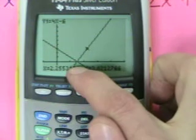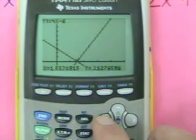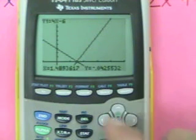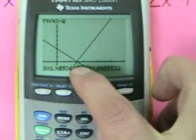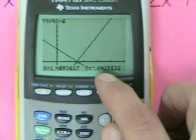It doesn't matter which line I'm on, I just want to find out where these cross, so I'm going to come and look. It helps to be zoomed in, and that looks like that's about as close as I'm going to get to where they cross: 1.48 and negative 0.04.